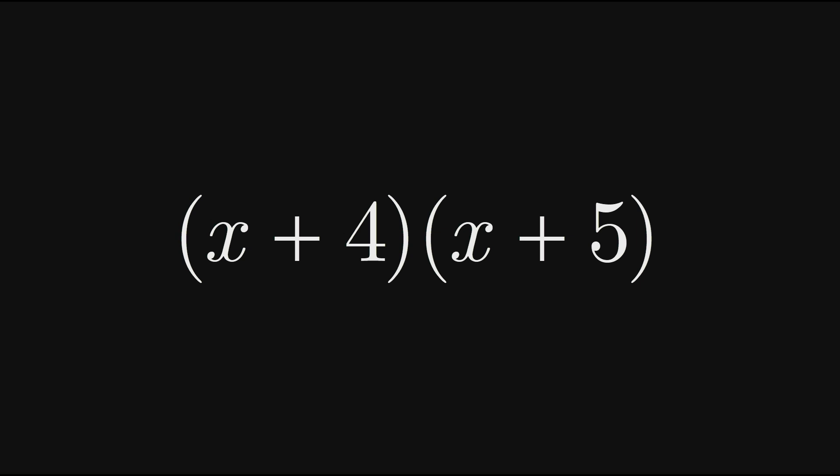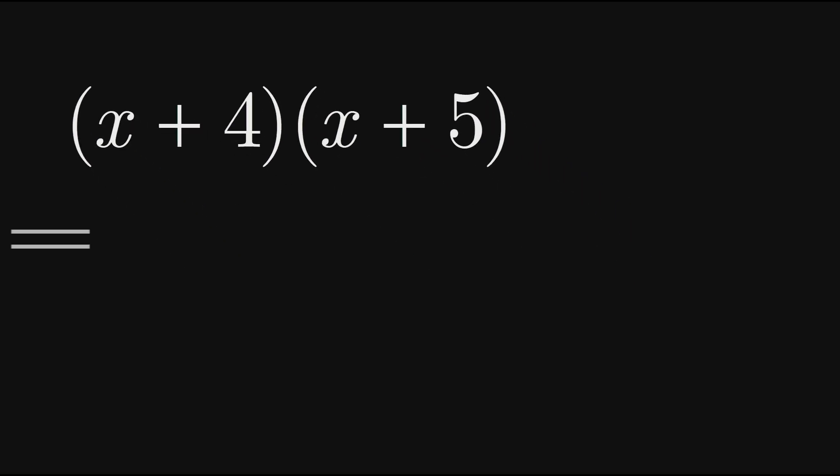To multiply these binomials we use the distributive property. In the end, each term in the first set of brackets gets multiplied by each term in the second set of brackets. x times x gives us x squared, x times 5 gives us 5x, 4 times x gives us 4x, and finally 4 times 5 gives us 20.